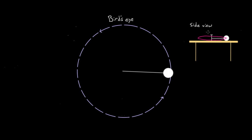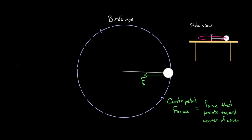What force is causing this ball to go in a circle? A lot of people want to answer that question with 'the centripetal force' — that the centripetal force points inward and causes this ball to go in a circle. And that's not wrong; it's the truth, but it's not the whole truth. When we say centripetal force, all we really mean is a force directed toward the center of the circle. So saying the centripetal force causes this ball to go in a circle is a little unsatisfying.